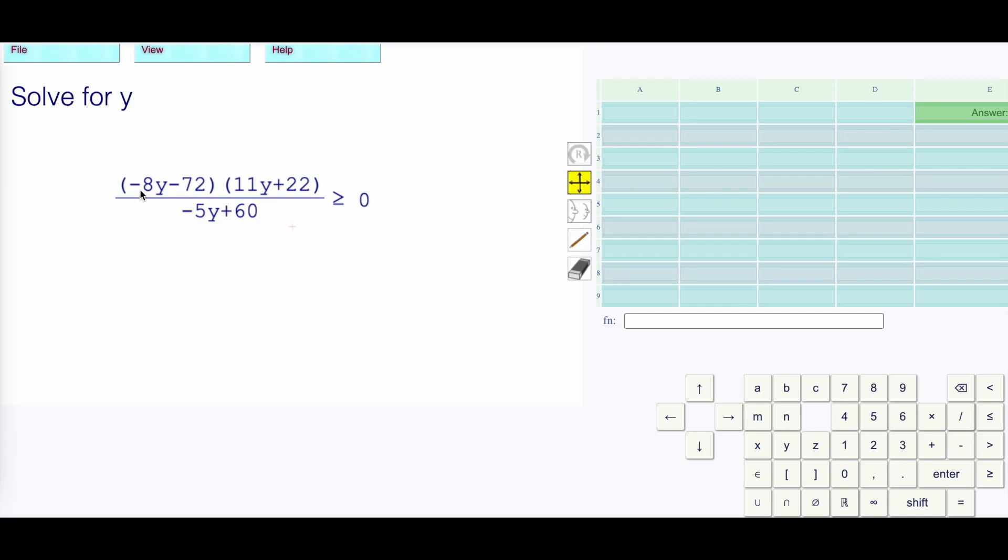Here's a level 17 type question. We have (-8y-72)(11y+22) divided by (-5y+60) is greater than or equal to 0.